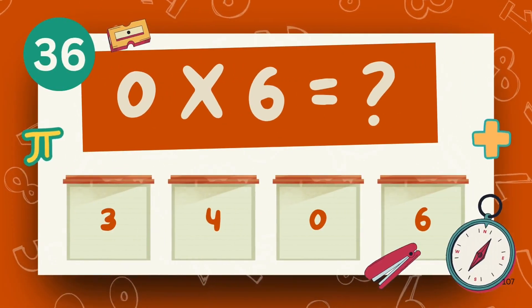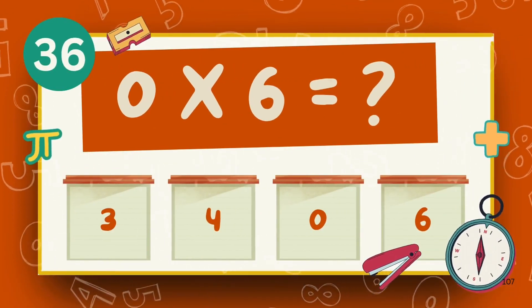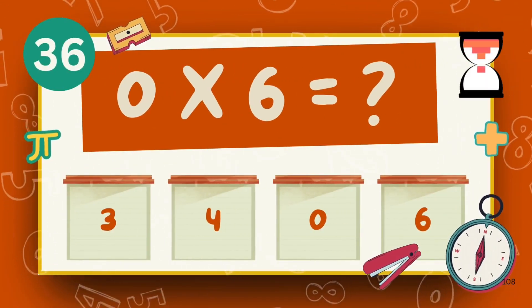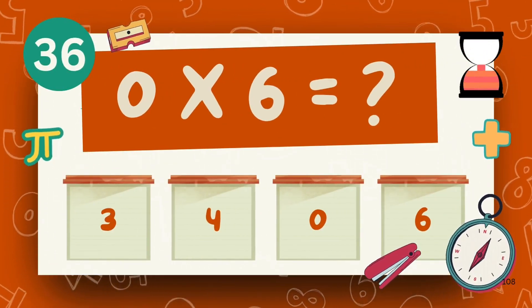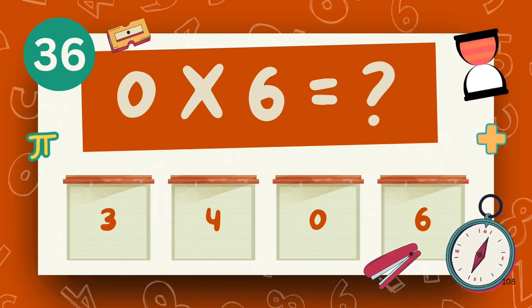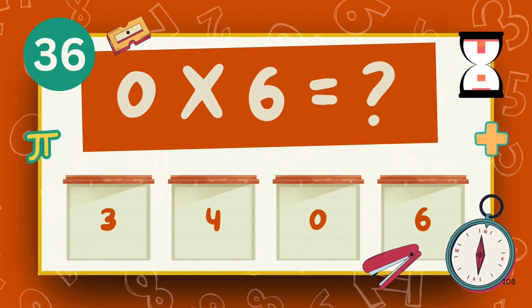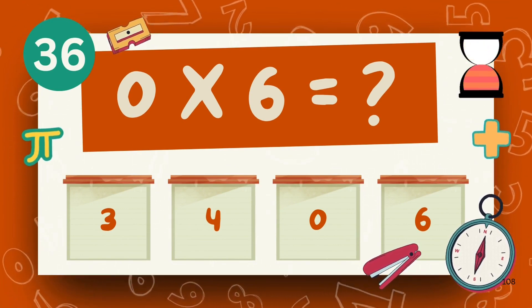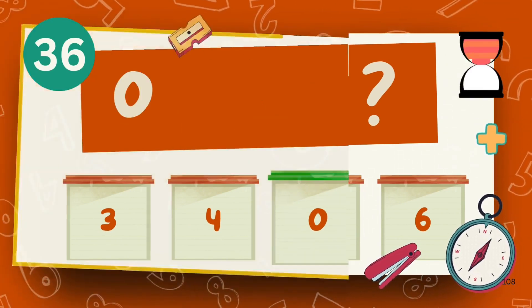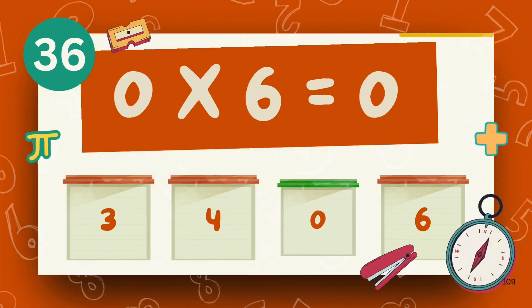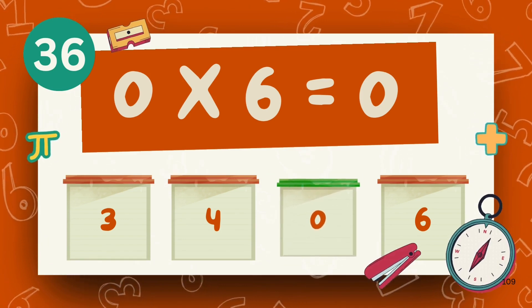What is zero multiply six? The answer is zero.